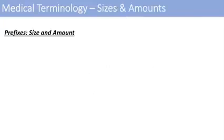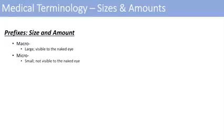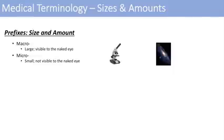To give you guys a brief background about certain prefixes that are commonly used, one of the first ones is macro. Macro just means large, and it's typically used in the context that it is visible to the naked eye — so macroscopic, macroeconomy. The opposite of that is micro, which means small or not visible to the naked eye. Think of a microscope: some things are microscopic, while galaxies in our observable universe are macroscopic.